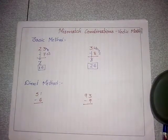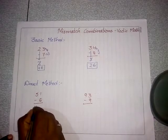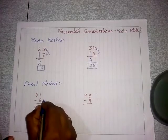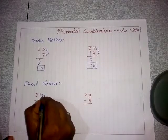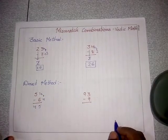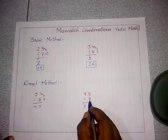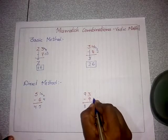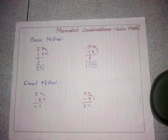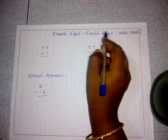Now the direct method: directly write 4 because the next place is mismatch. The complement of 6 is 4; add 4 to the above number — 4 plus 1 equals 5. The answer is 45. Another example: directly write 8 because the next place is mismatch. The complement of 9 is 1; add 1 to 3 — equals 4. The answer is 84.